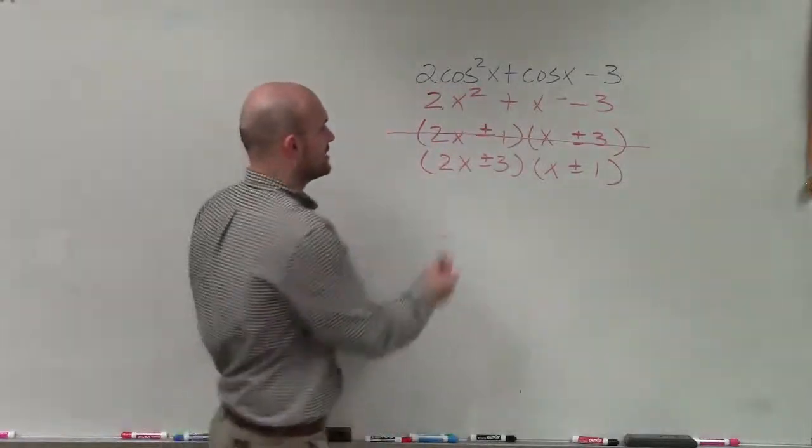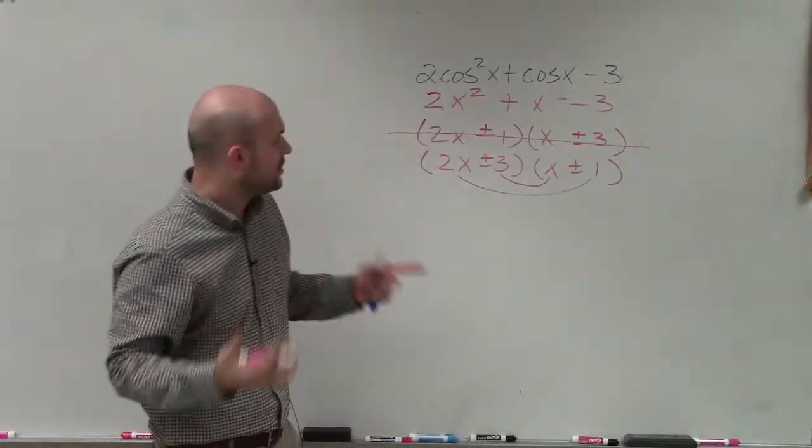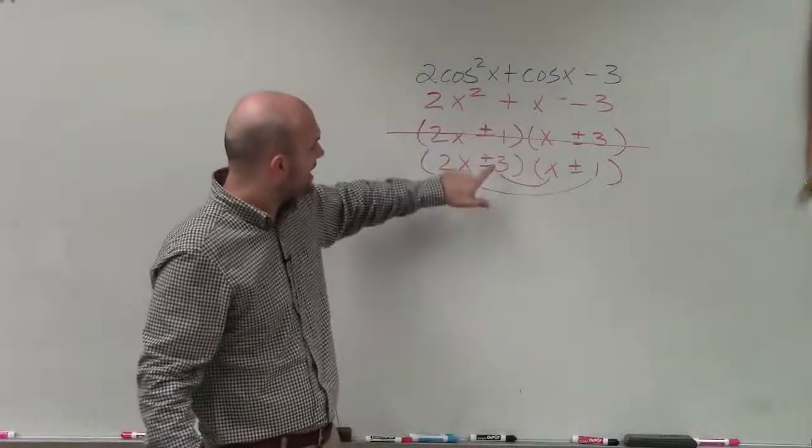So let's look at this one here. I can multiply 2x times 1 and 3 times x. So since my middle term is positive, I know that this 3,